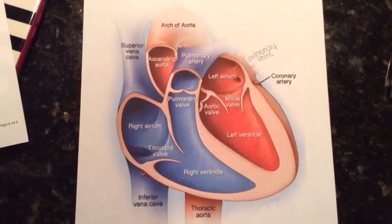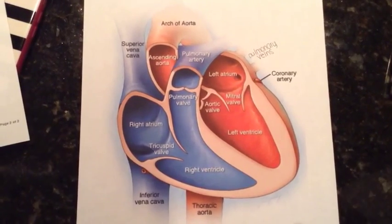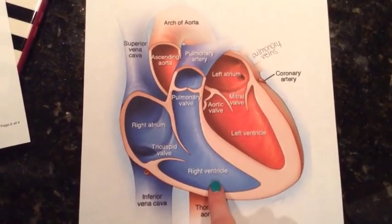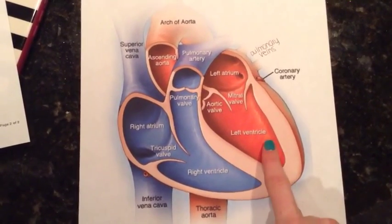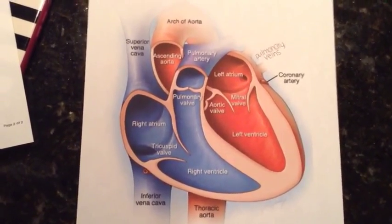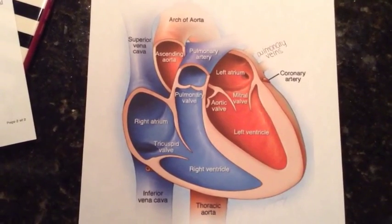The lower two chambers of the heart are called ventricles. They are separated by a septum into the left ventricle and the right ventricle.